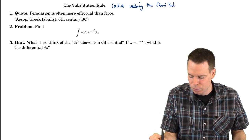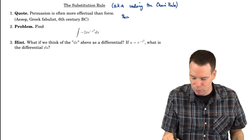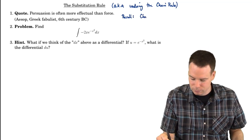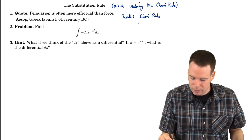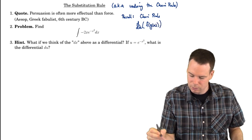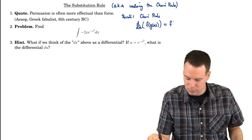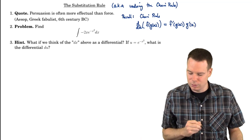Remember, the chain rule was a differentiation technique for computing the derivative of a composition of functions. It says if you're staring at a composition of functions and you want to compute its derivative, you do the derivative of the outside function, evaluate at the inside, and multiply by the derivative of the inside function.